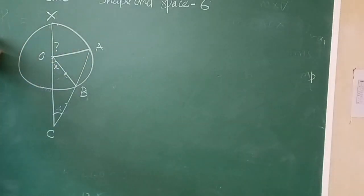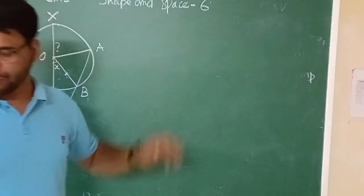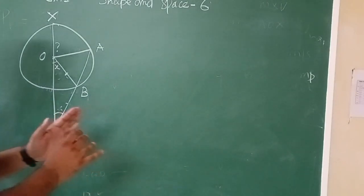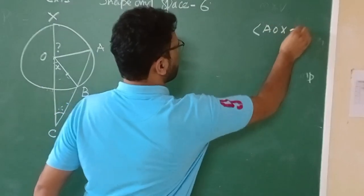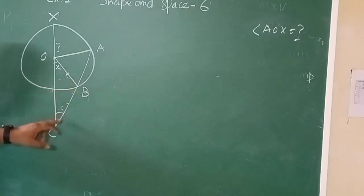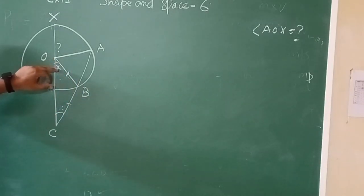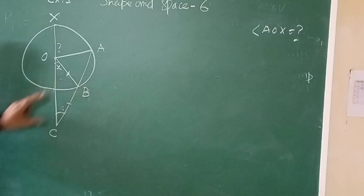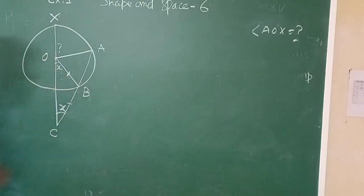In this video we will solve question number 9 from Exercise 1 star, Shape and Space 6, chapter page 17. The question asks: find angle AOX in terms of x. From the figure, OB and BC are two equal sides, so from triangle BOC we can say the base angles are equal. Since these are base angles of an isosceles triangle, this angle is also x.